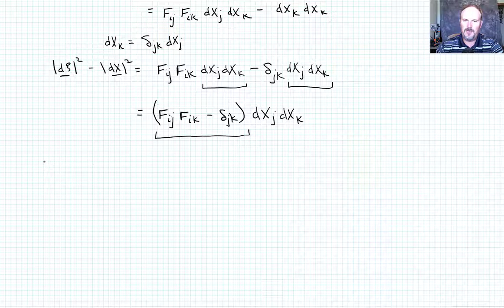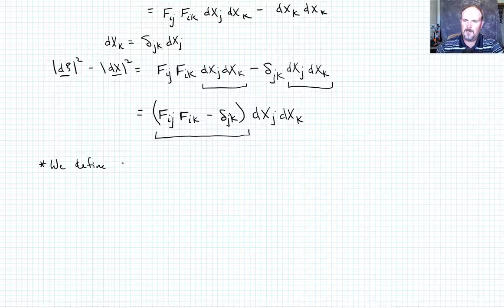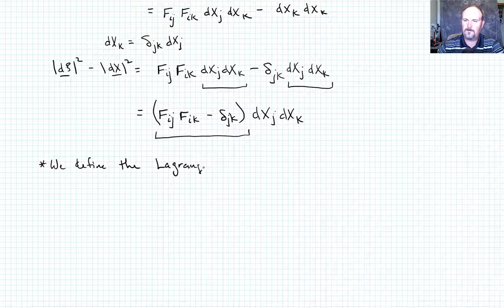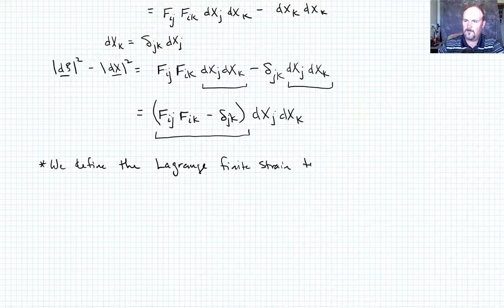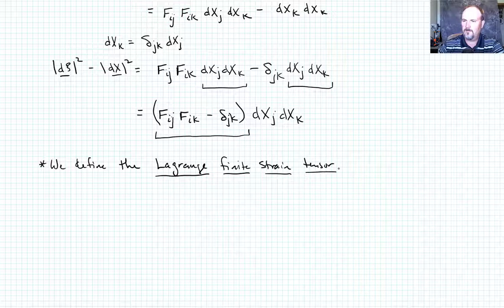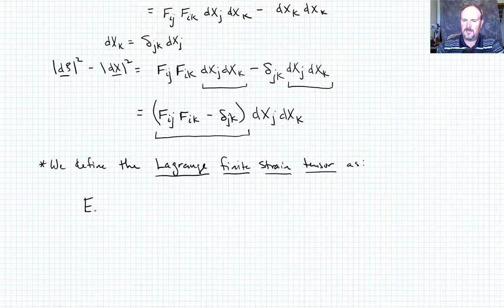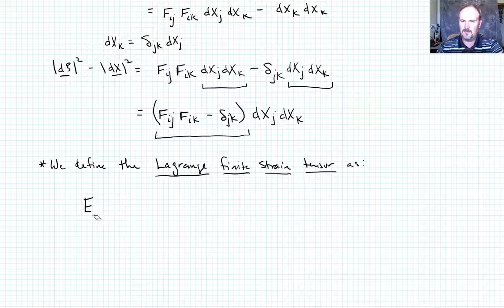And we're going to just now introduce a definition. So we define what's called the Lagrange finite strain tensor as follows. We define it as capital E. In this case, I'm just going to, for consistency, let's see, I'll go ahead and use the same index values that I have up there. We'll call it E_jk.